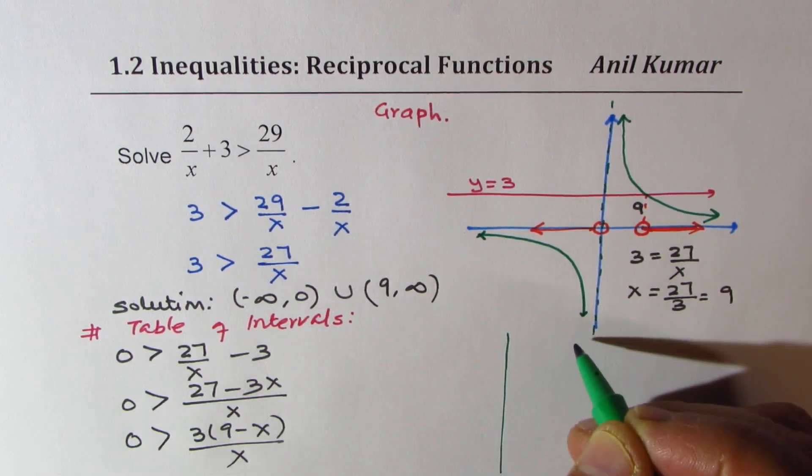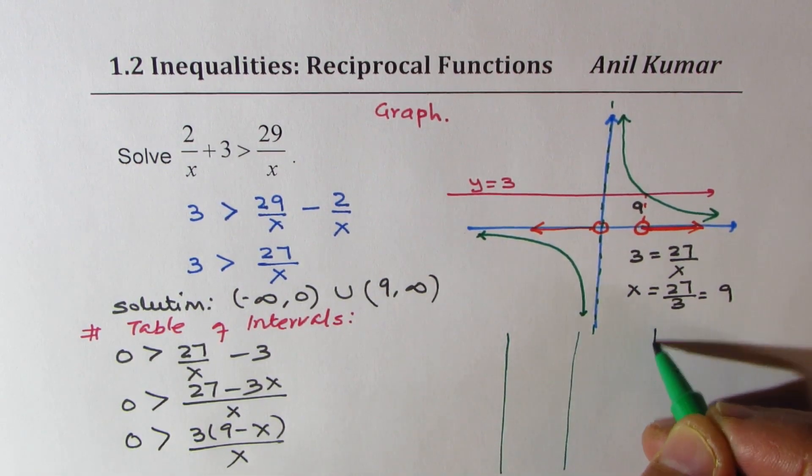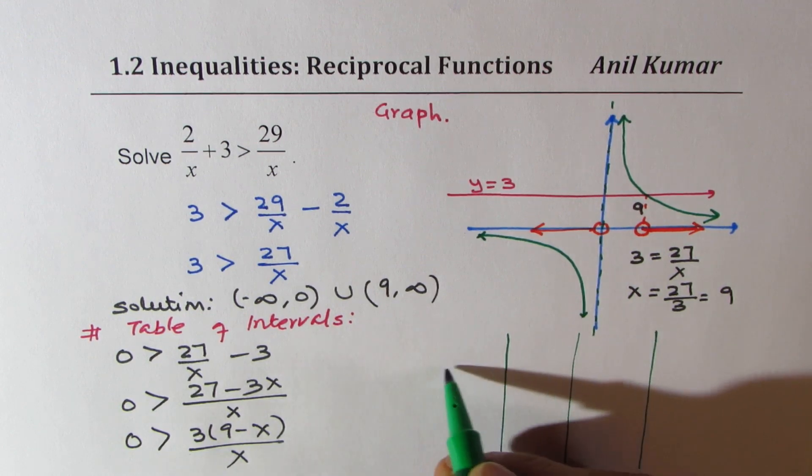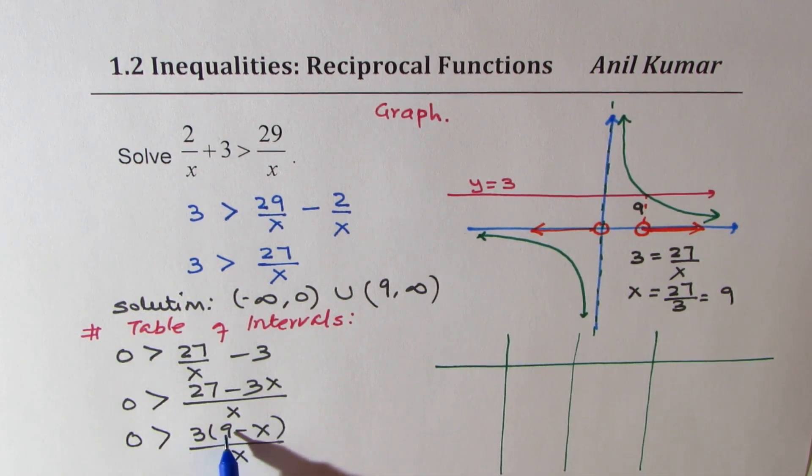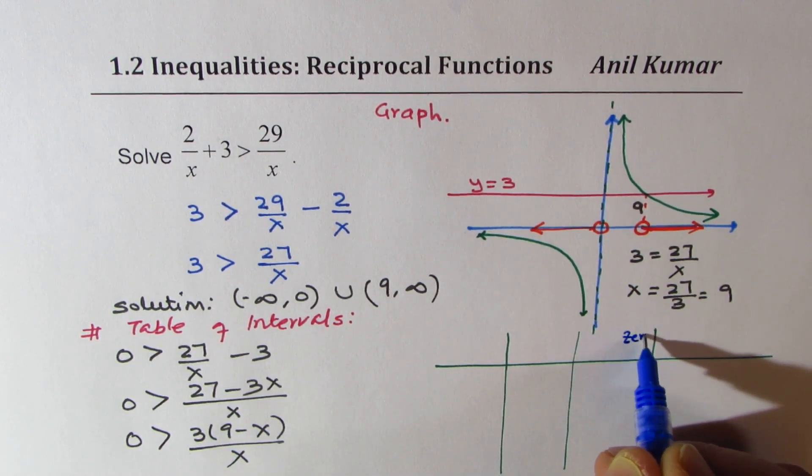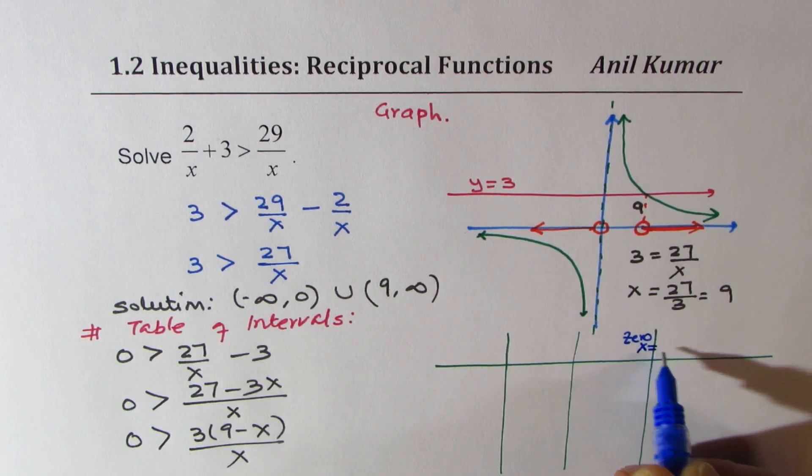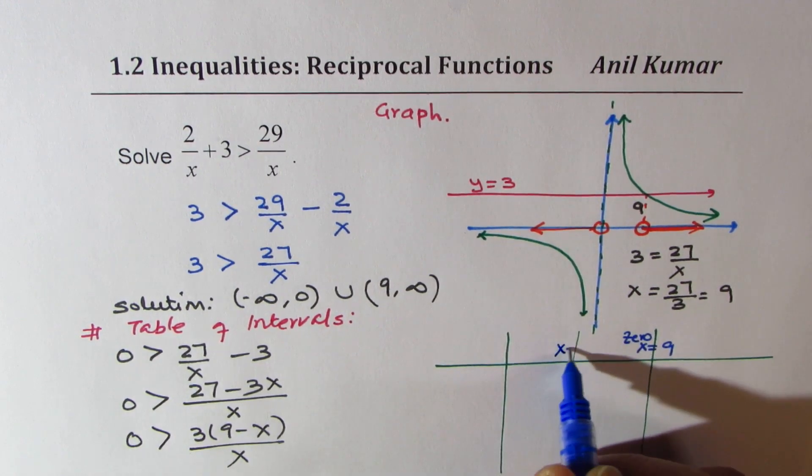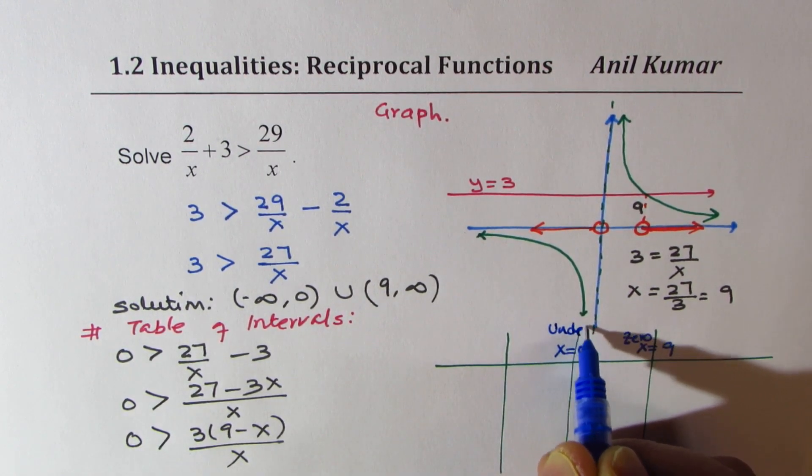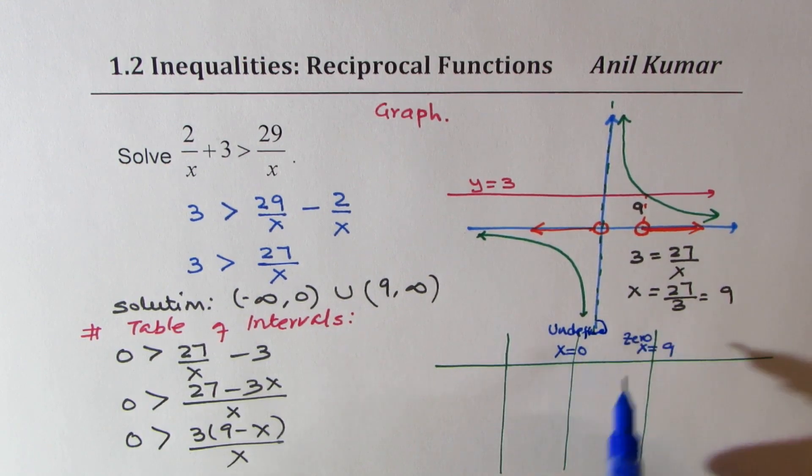So what we will do here is make a table with zeros and undefined values. At x = 9, we have a zero when this factor is 0. And then this factor is undefined at x = 0.